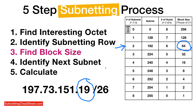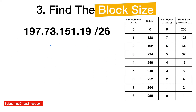Now let's show everything in action. Step three is to find the block size. So if you're given this IP address with this CIDR, we've already discussed that this is our subnetting row and this is our block size.